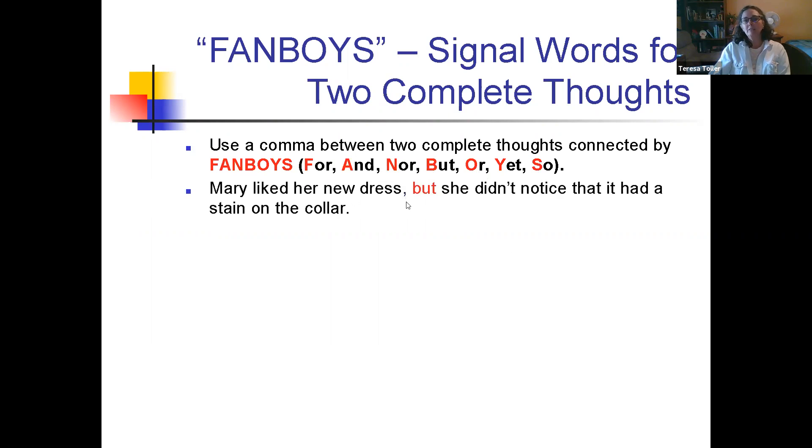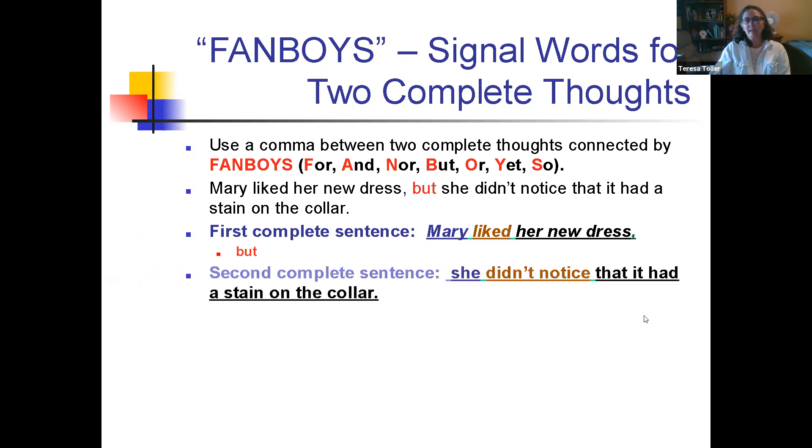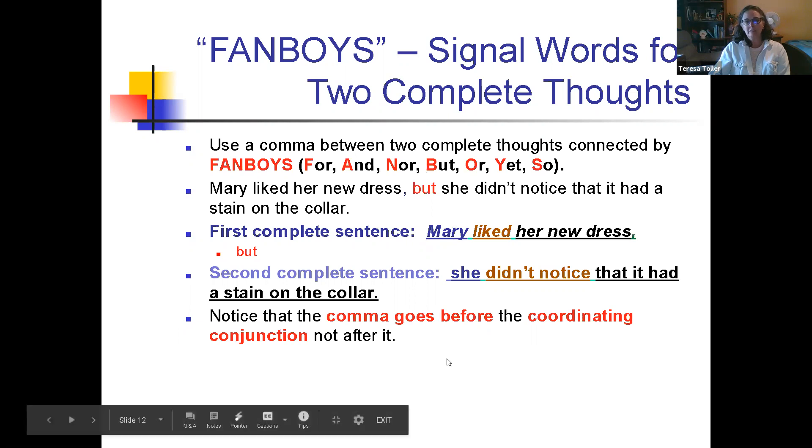Mary liked her new dress, comma, but she didn't notice it had a stain on the collar. There's a first complete sentence: Mary liked her new dress, comma comes before the FANBOY, and then the second complete sentence. If you forgot to put in a FANBOY, you would have a run-on sentence. Mary liked her new dress. She didn't notice it had a stain on the collar. Run-on sentence. Two complete thoughts. The comma goes before the FANBOY.